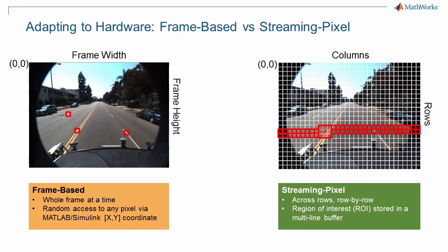A straightforward case is color space conversion — you just convert each pixel as it passes through. But if you need to do something like filtering or edge detection, you need a window to operate on, or a region of interest, which requires storing multiple lines of pixels in what's called line buffer memory. That small amount will typically fit into the block RAM on the FPGA, but you will need to adapt your algorithms to work on this sliding window. Image processing in a frame-based world is very different from implementing these algorithms as pixel streaming hardware.